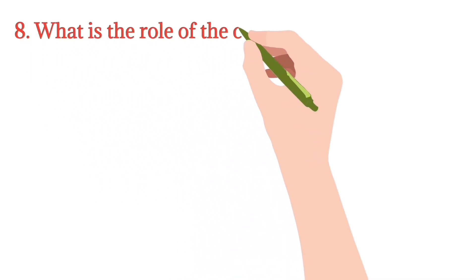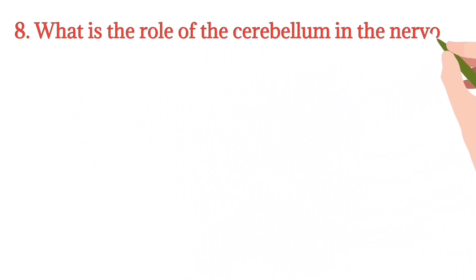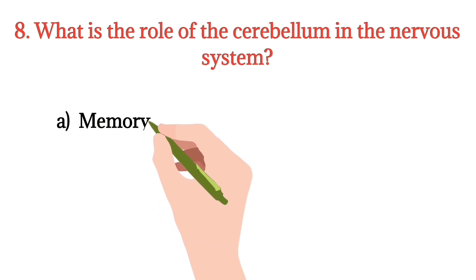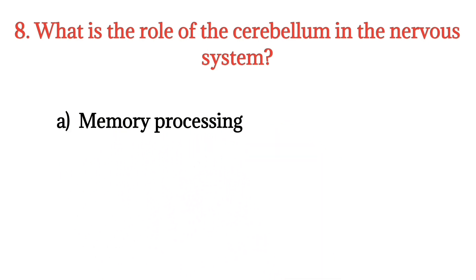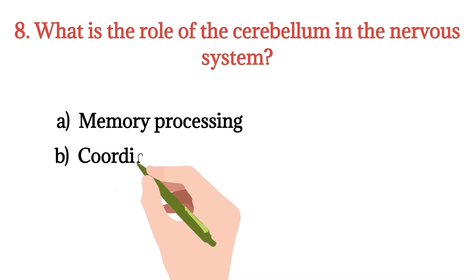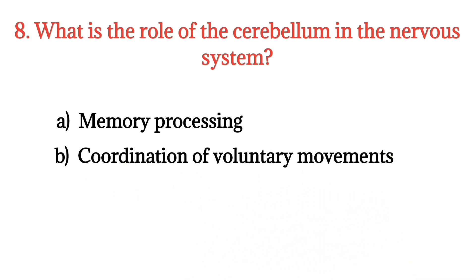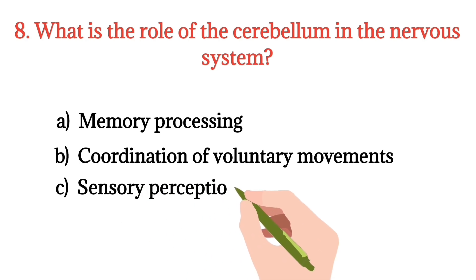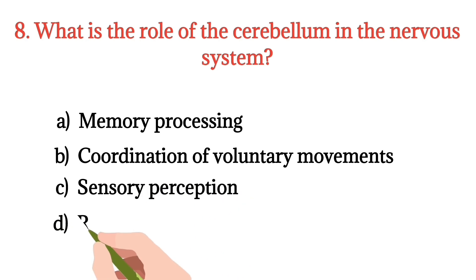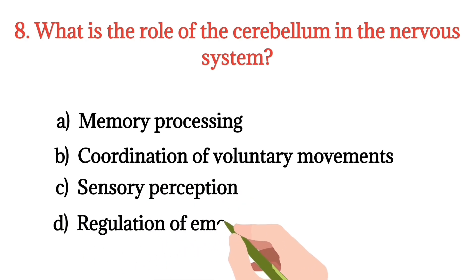MCQ number 8. What is the role of the cerebellum in the nervous system? Option A: Memory processing. Option B: Coordination of voluntary movements. Option C: Sensory perception. Option D: Regulation of emotions. The right option is Option B.